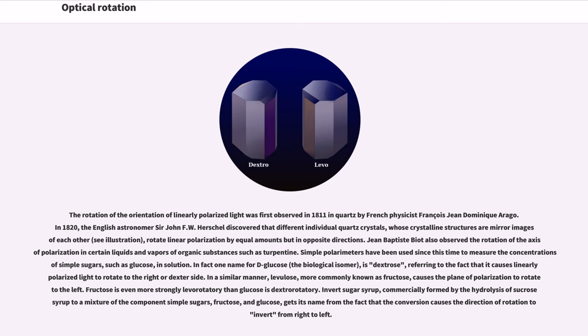In a similar manner, levulose, more commonly known as fructose, causes the plane of polarization to rotate to the left. Fructose is even more strongly levorotatory than glucose is dextrorotatory. Invert sugar syrup, commercially formed by the hydrolysis of sucrose syrup to a mixture of the component simple sugars, fructose and glucose, gets its name from the fact that the conversion causes the direction of rotation to invert from right to left.